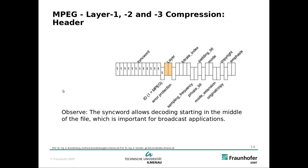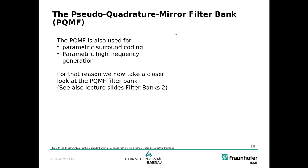Here we can see the basic structure of our bitstream. Especially when we have streaming like on radio or internet, when we start decoding in the middle of the stream it's important to have a sync word — here a series of ones — and then additional information which tells the decoder how to decode and play back the audio. The PQMF is also used for parametric surround coding and parametric high frequency generation, which are current tools for audio coding. For that reason, we want to take a closer look at the PQMF filter bank.